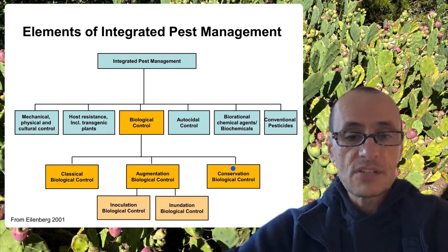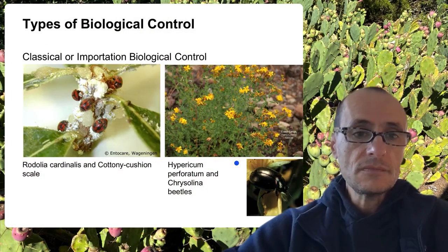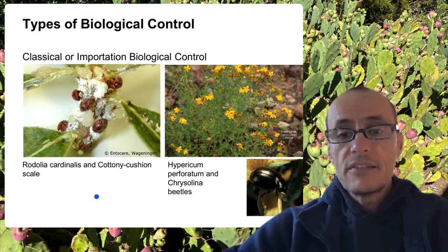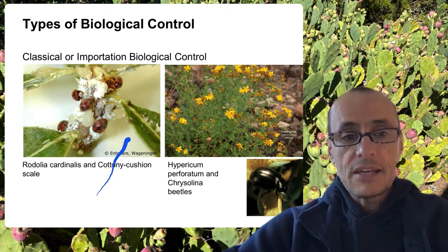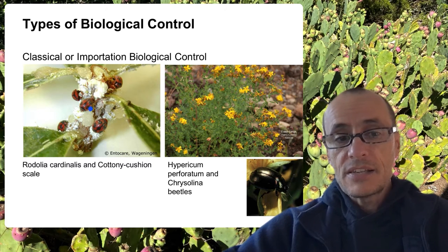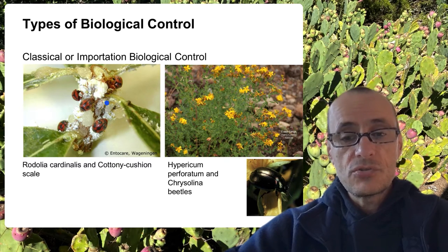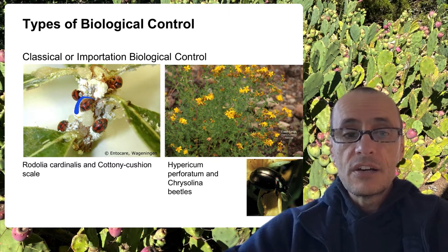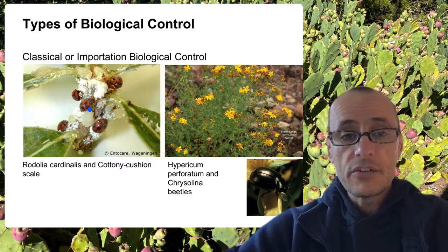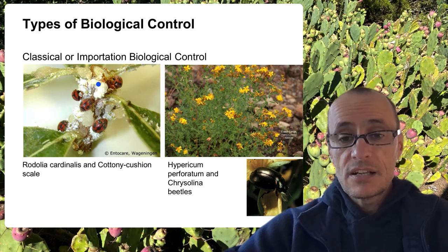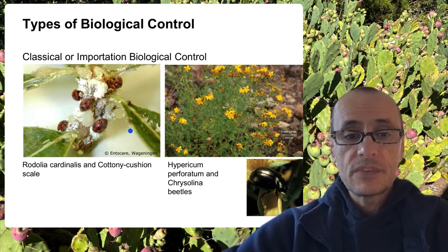Classical or importation biological control is basically, as the name suggests, the idea of reuniting a potential pest with its natural enemies. Things like the cottony cushion scale, native to Southeast Asia or Australasia, and the Vedalia beetle, Rodolia cardinalis, that was identified as a potentially important predator, which was then released in Southern California, where it still maintains and suppresses these pests of citrus.